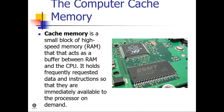Cache memory is a small block of high-speed memory or RAM that acts as a buffer between RAM and the CPU. It holds frequently requested data and instructions so that they are immediately available to the processor on demand. Most CPUs have an internal cache memory built into the processor, referred to as Level 1 or primary cache memory. This can be supplemented by external cache memory fitted on the motherboard, known as Level 2 or secondary cache.